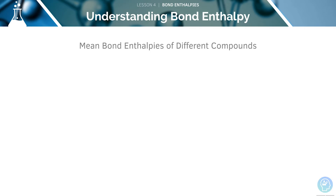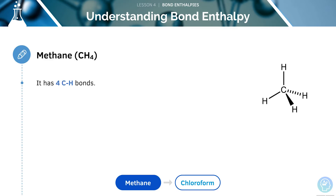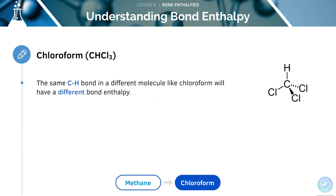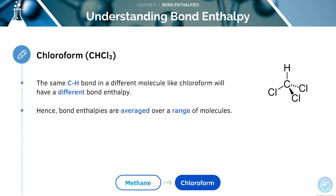Let's look at some mean bond enthalpies in different compounds. If we consider methane, CH4, it has four C-H bonds. Breaking each of these bonds takes a different amount of energy, which is why we use a mean bond enthalpy for the C-H bond. The same C-H bond in a different molecule like chloroform will have a different bond enthalpy — this is another reason why we use mean bond enthalpies, which are averaged over a range of molecules.